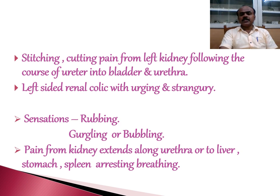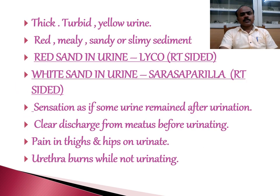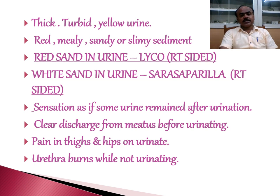The pain from the kidneys extends along the urethra and may also extend to the liver, stomach, and spleen — the pain may also restrict breathing. A stitching cutting pain from the left kidney follows the course of the ureter into the bladder and urethra. Left-sided renal colic with urging and strangury. In Berberis Vulgaris, renal calculi pain may radiate in different directions and to different organs. There is a peculiar bubbling sensation found in renal calculi. The urine is thick, turbid, and yellow in colour, with red mainly sandy or slimy sediment — red sand in urine. Lycopodium also has red sand in urine and is a right-sided drug, whereas Berberis is a left-sided drug. There is also white sand in urine in Berberis Vulgaris, and another remedy is Sarsaparilla, which is right-sided.